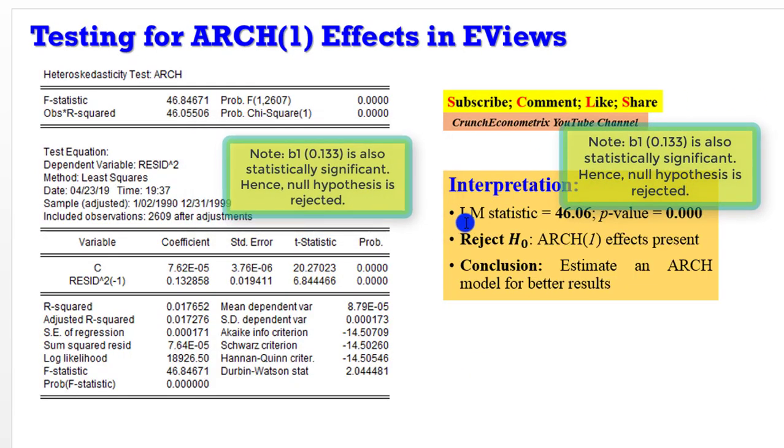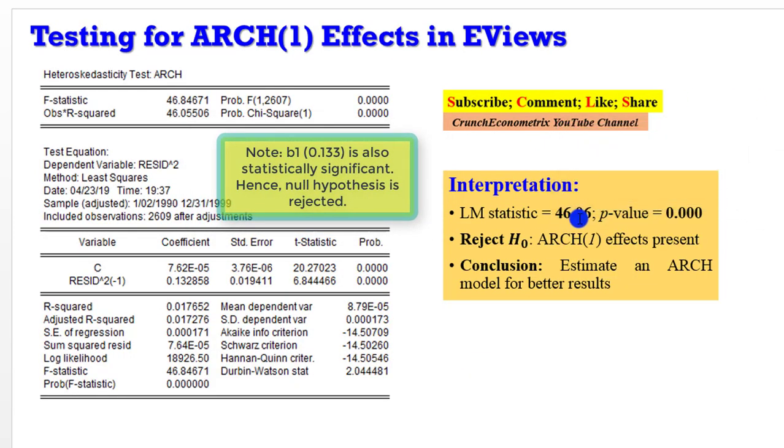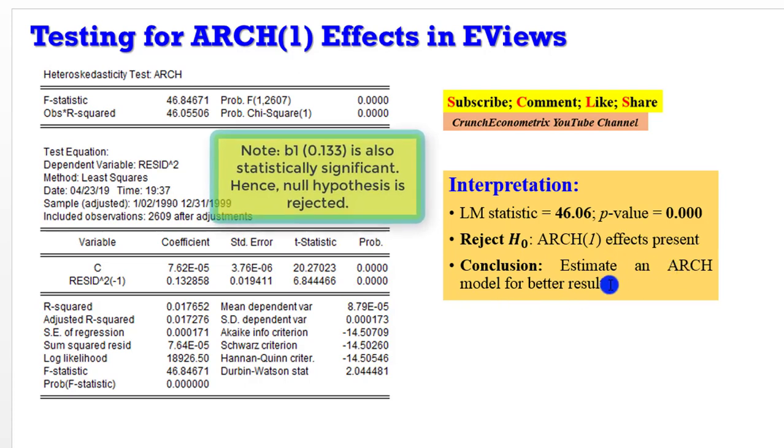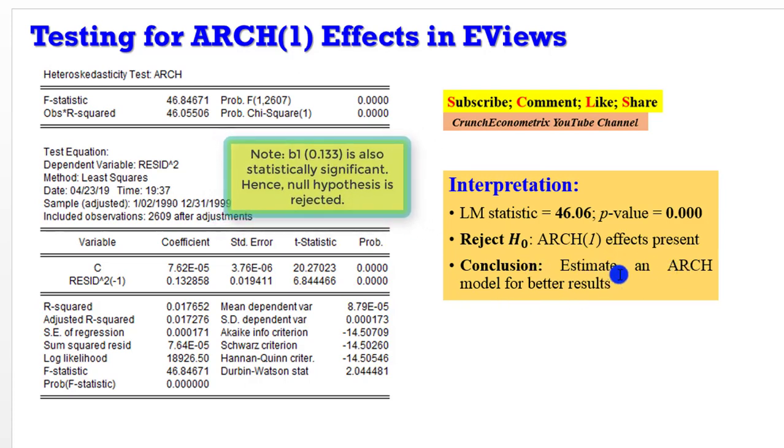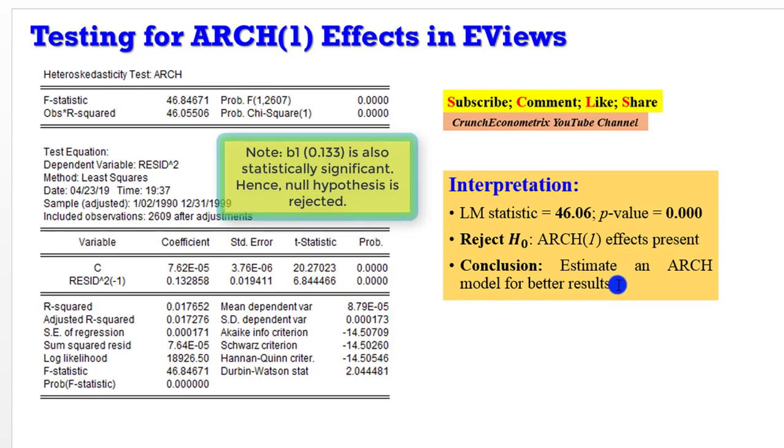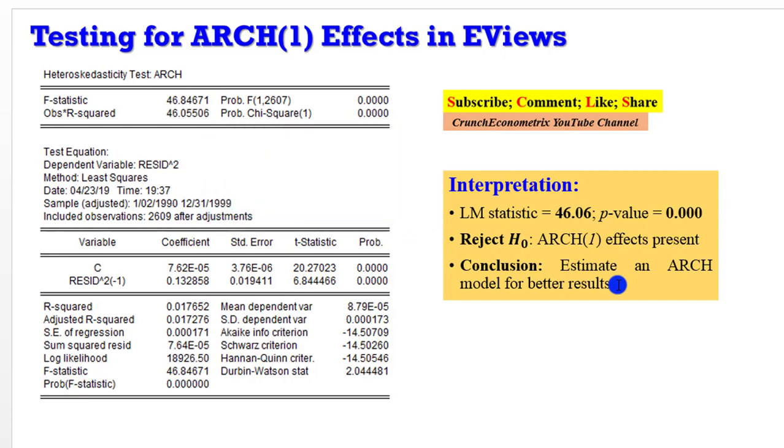I wrap it up by saying the LM statistic is 46.06 with a very significant p-value. You have to reject the null hypothesis because ARCH(1) effect is evidently present. The final conclusion is that it is better to estimate an ARCH model for better results. You estimate an ARCH model only if the presence of ARCH effects is evident. If there is no ARCH effect, please do not estimate an ARCH model.